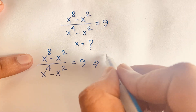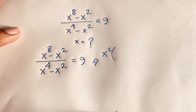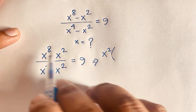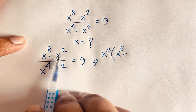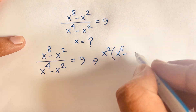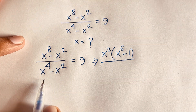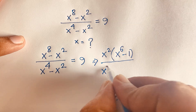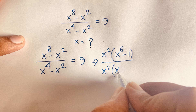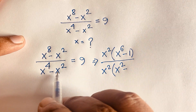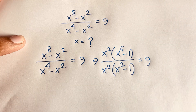In this expression I can see that x squared is common in the numerator: x² times (x⁸ ÷ x² = x⁶, minus x² ÷ x² = 1). And in the denominator, x² is common: x⁴ ÷ x² = x², minus x² ÷ x² = 1. So we get x²(x⁶ - 1) over x²(x² - 1) is equal to 9.